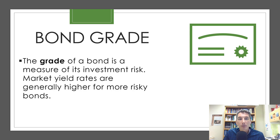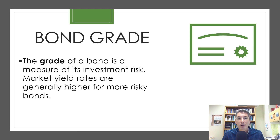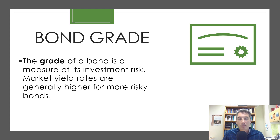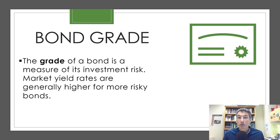Bond grade. The grade of a bond is a measure of its investment risk. Market yield rates are generally higher for more risky bonds. You've got triple-A bonds, double-A, single-A, that kind of thing. Typically, the higher rated a bond is, the lower the interest rate would be, because you're more likely to get payment — there's less risk in that. And so it's going to be set at an appropriate relative level. And then as risk goes up, the interest rate goes up as well.